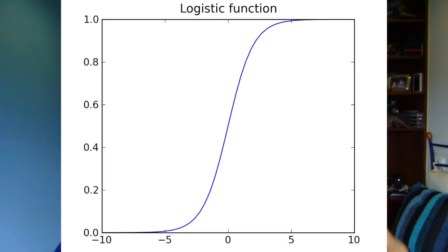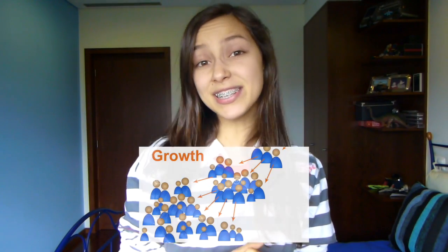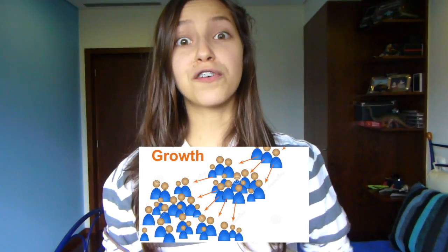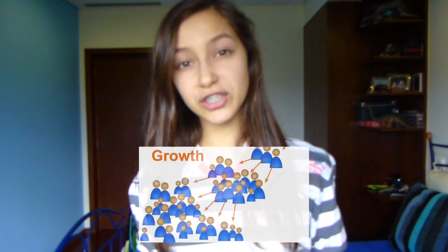Graphically, it shows up as an S-shaped curve called sigmoid. The name logistic was given by the mathematician Pierre Verhulst while he was studying the growth of a population.